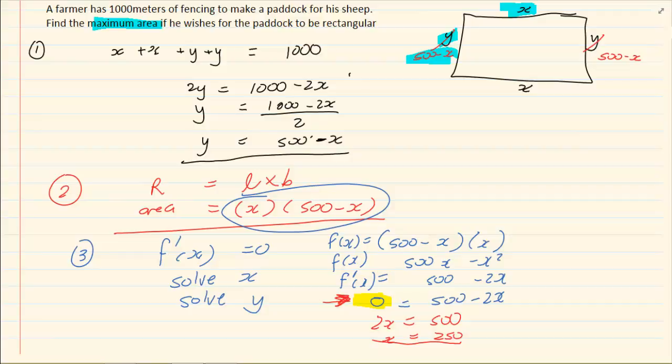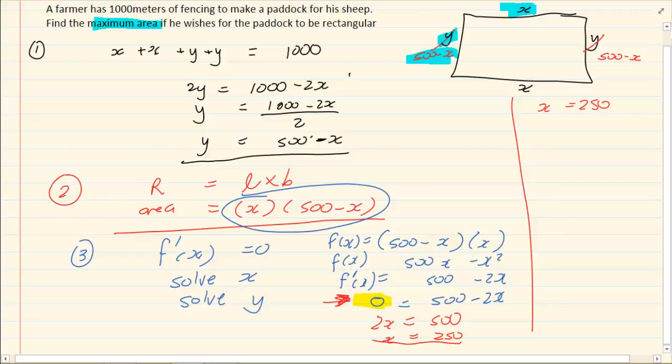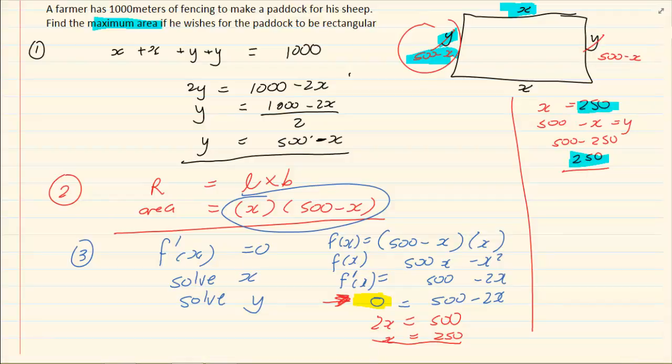So, to get maximum, we know that x must equal to 250. What would the other side be? It would be 500 minus x. So, we know it would be 500 minus 250, which equals to 250. So, this rectangular shape has a length of 250 and a breadth of 250.